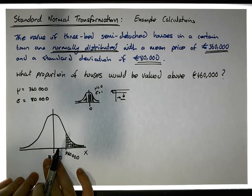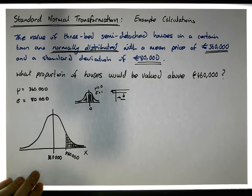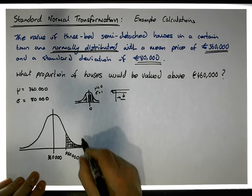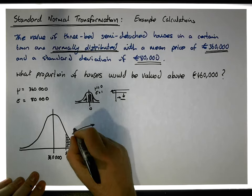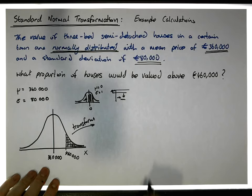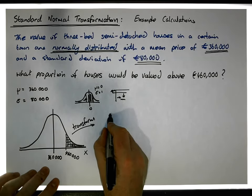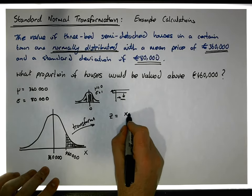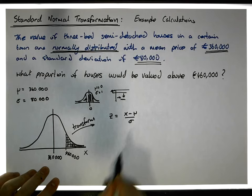If we could transform this curve into one of these standard normal curves, we should be able to calculate what this area is, and we can do that. We have a transformation we can use called the standard normal transformation, and it looks like this: z equals x minus mu over sigma.